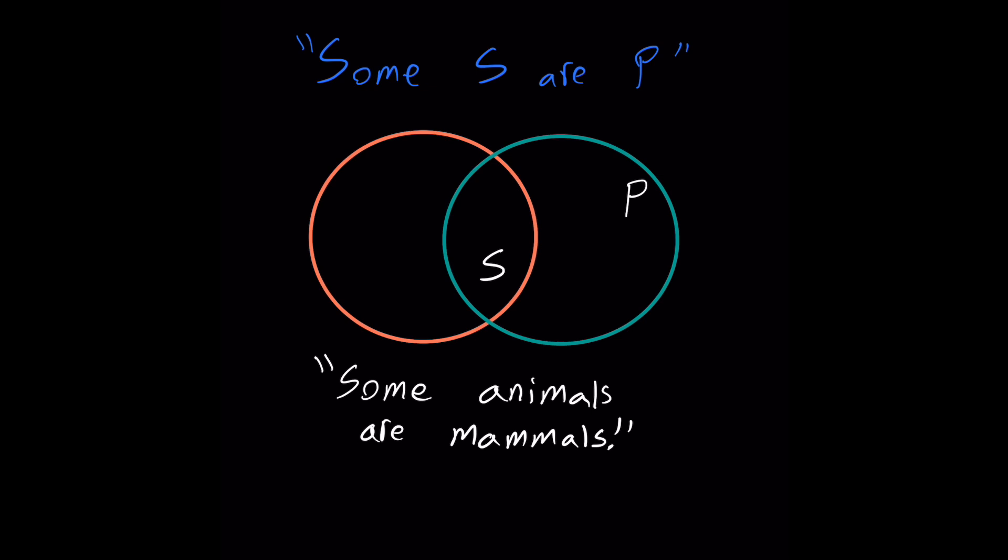Next, we have the particular affirmative proposition, some S are P. For example, some animals are mammals. Animals is the subject, mammals is the predicate. At least one member of S belongs to P. Notice the circles overlap. S appears in the common area. Some animals are contained within mammals.